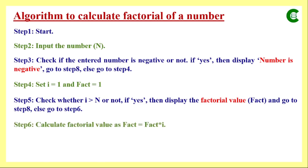Step 6 calculates the factorial: fact = fact × i. Initially fact is 1 and i is 1, so fact becomes 1. Then in Step 7 we increment i by 1, making i equal to 2, and return to Step 5. We repeat this iteration. If n is 1, then i becomes 2, which is greater than 1, so we display fact = 1, which is correct.